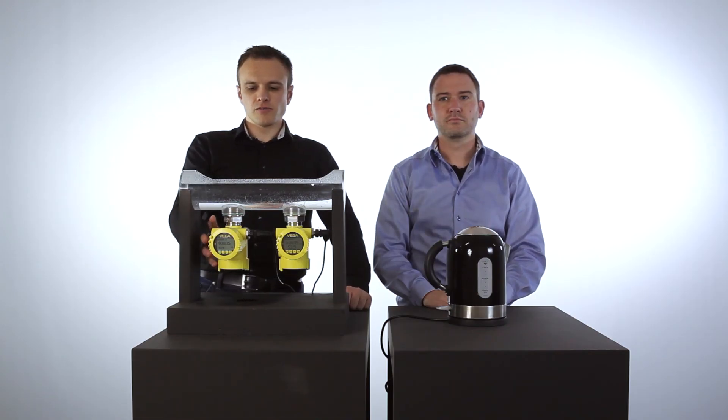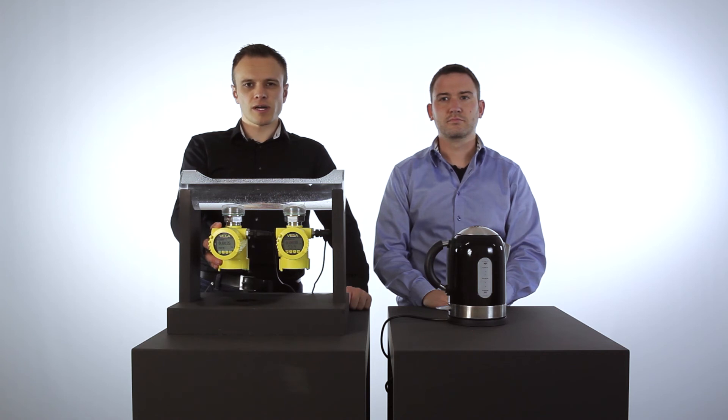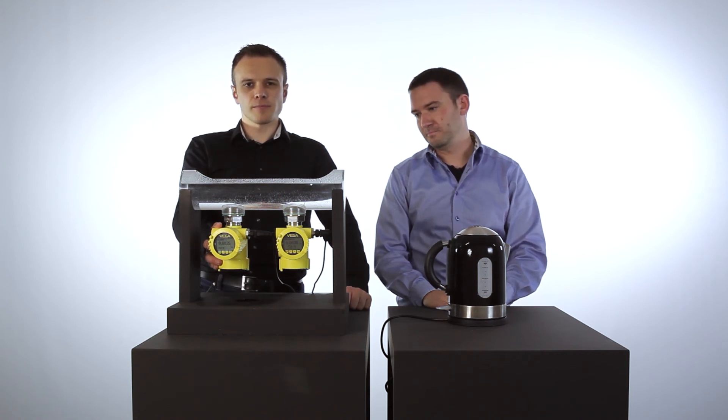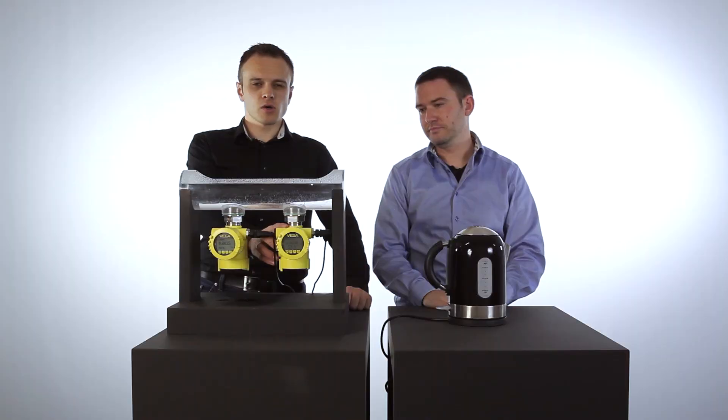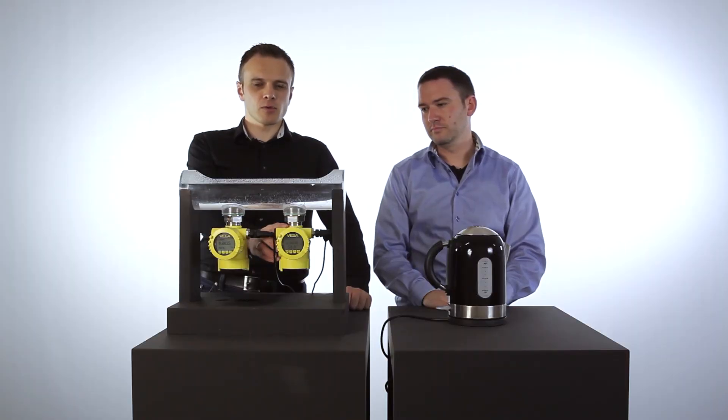The Vega Bar 52 will also come to the right value after a specific time. The Vega Bar 82 is on the correct value all the time because of the integrated temperature shock compensation.